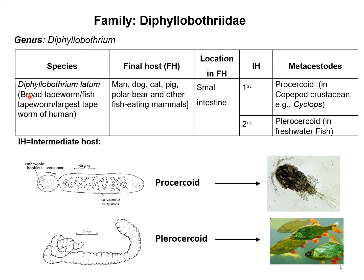Diphyllobothrium latum, also known as broad tapeworm or fish tapeworm, is also called the largest tapeworm of humans due to its size. This parasite can be found in man, dog, cat, pig, polar bear, and different other fish-eating mammals.